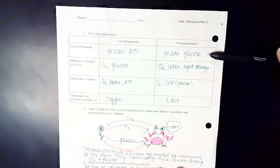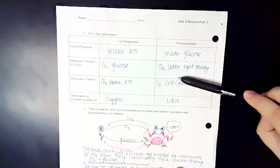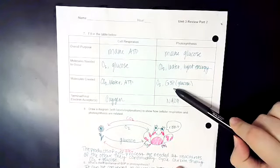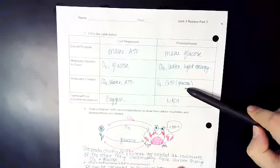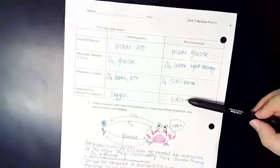In photosynthesis, the overall purpose is to make glucose. Molecules needed is CO2, water, and light energy. Molecules created is O2 and G3P, which then can be made into glucose. And our terminal or our final electron acceptor is NADP+.